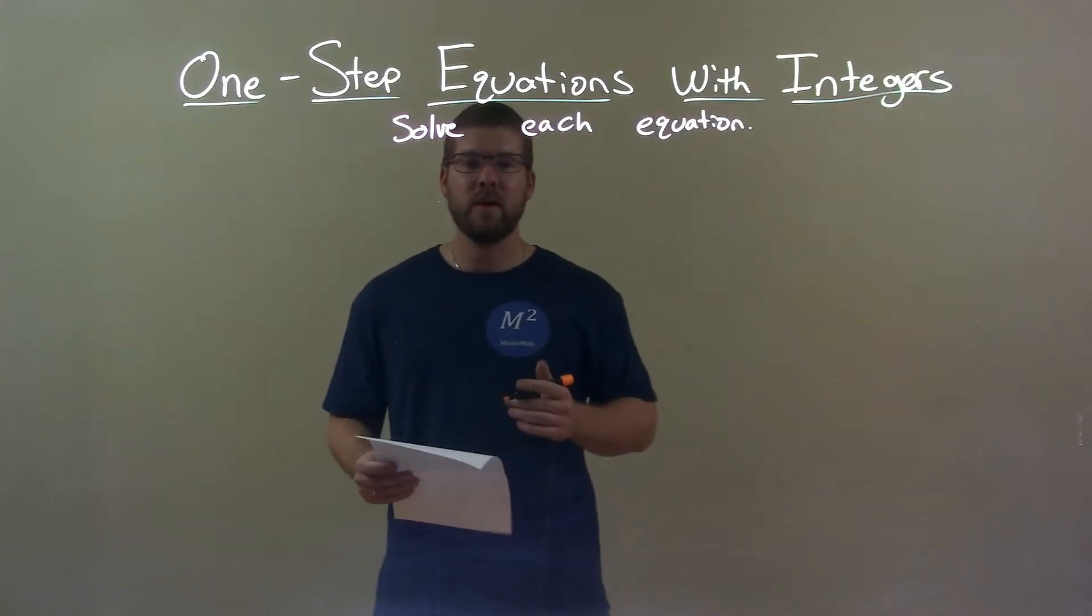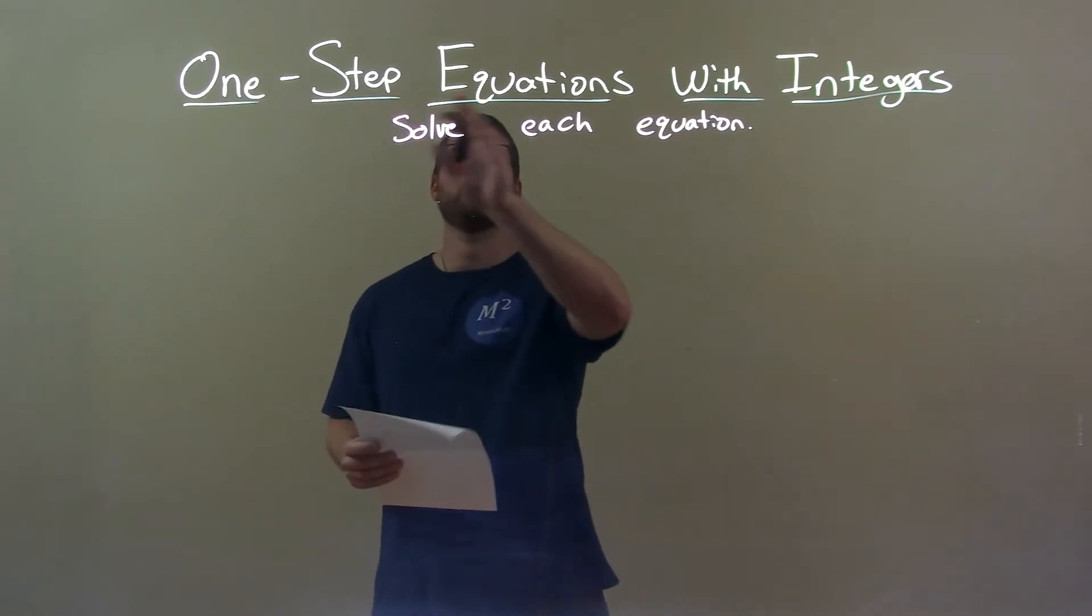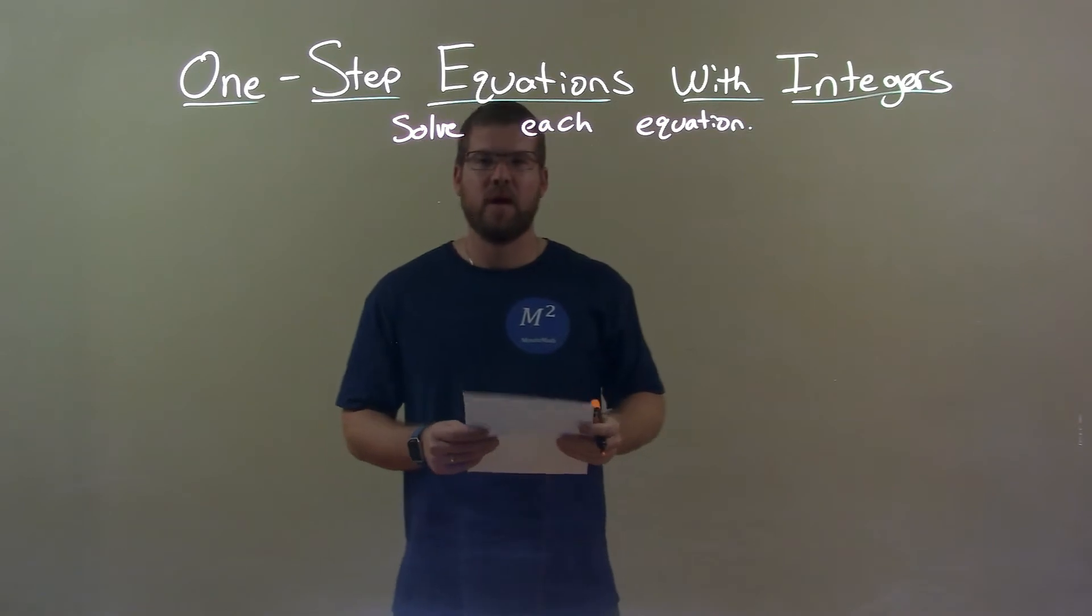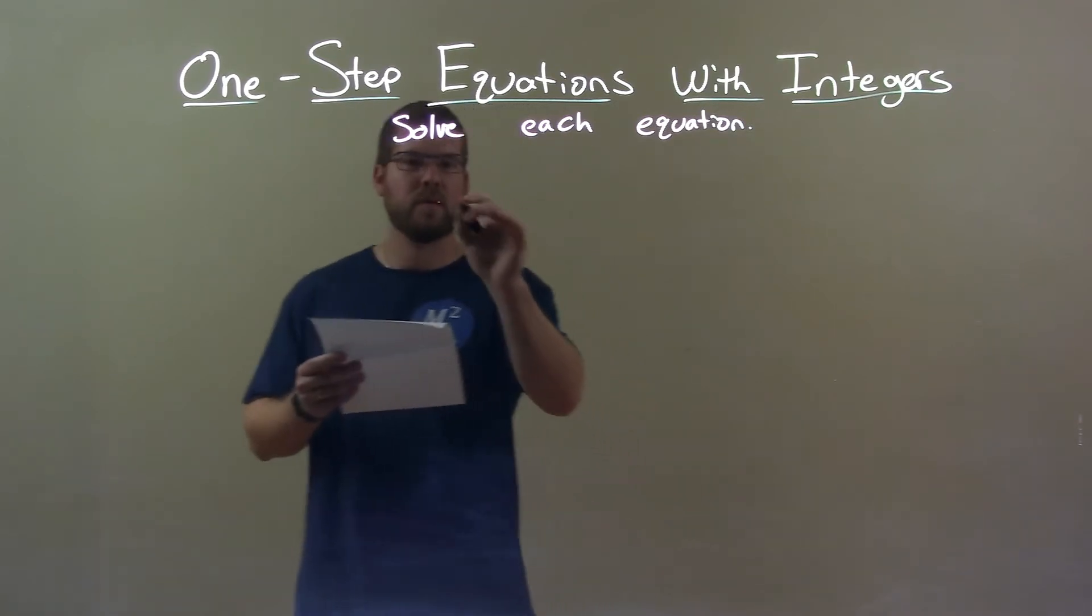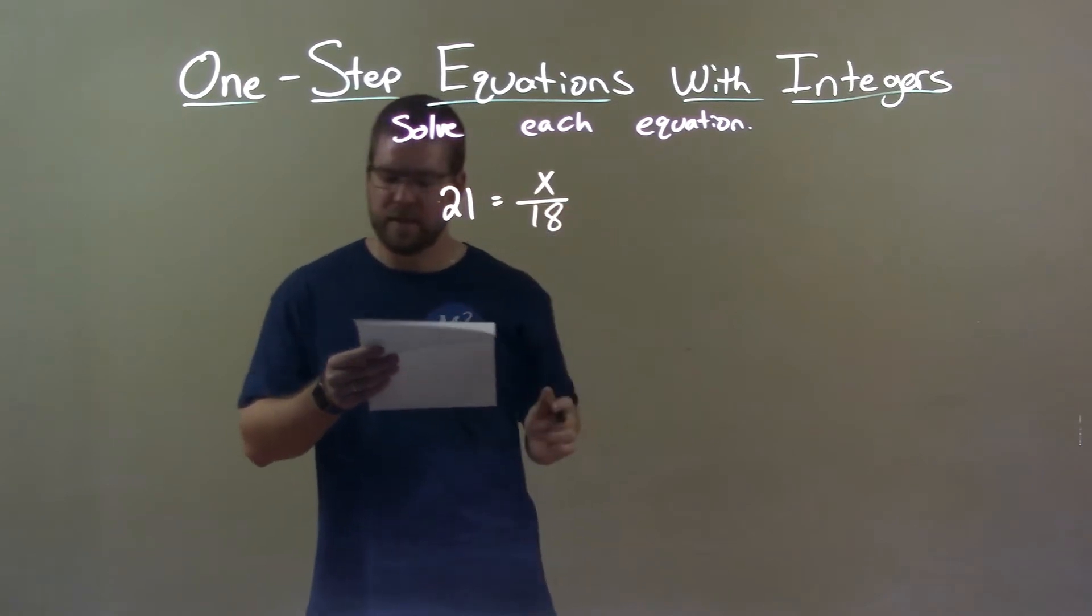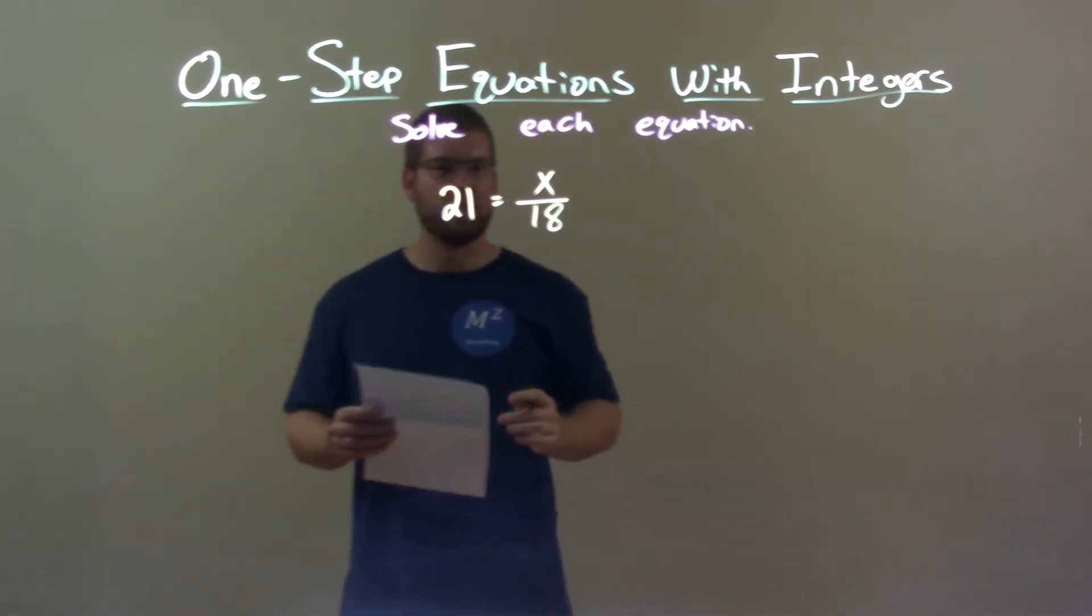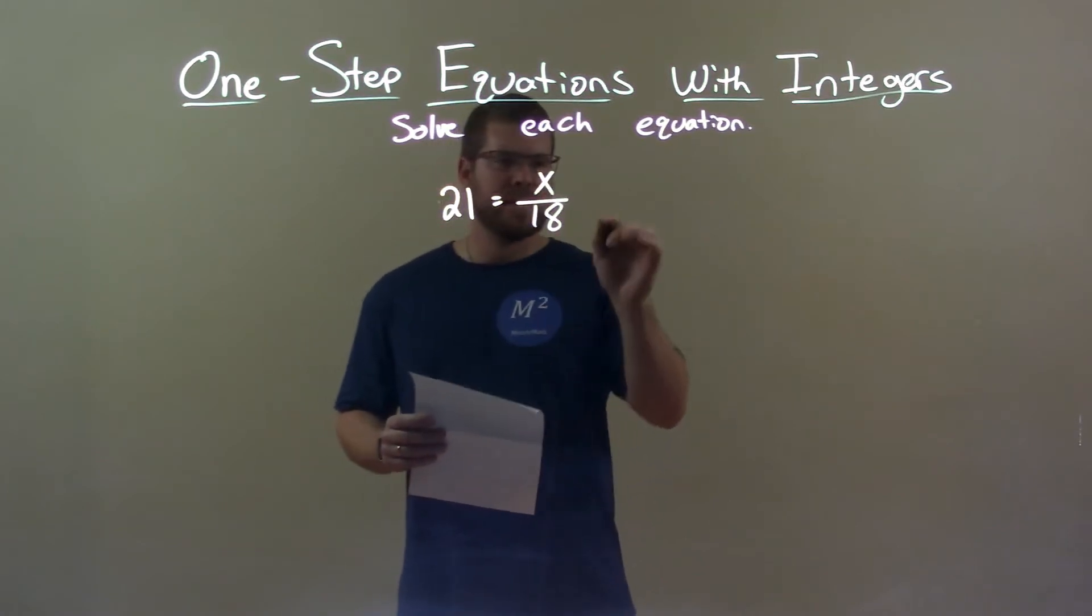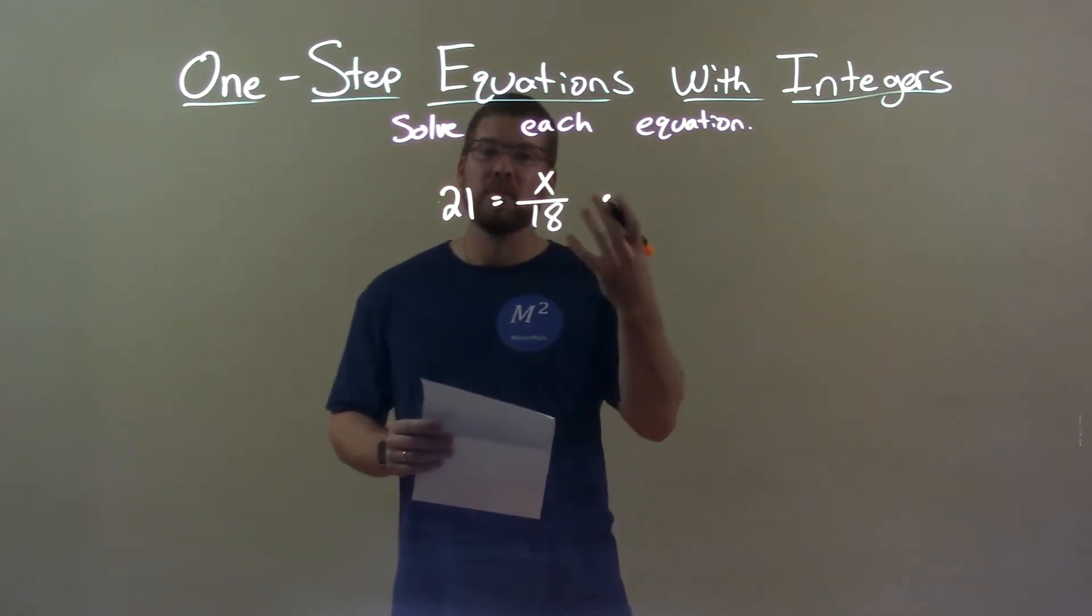Hi, I'm Sean Gannon, and this is MinuteMath, and today we're learning about one-step equations with integers. We'll solve each equation. If I was given this equation, 21 equals x over 18, I want to get x by itself, but it's being divided by an 18. To get rid of that 18, I have to do the opposite of division, multiplication.